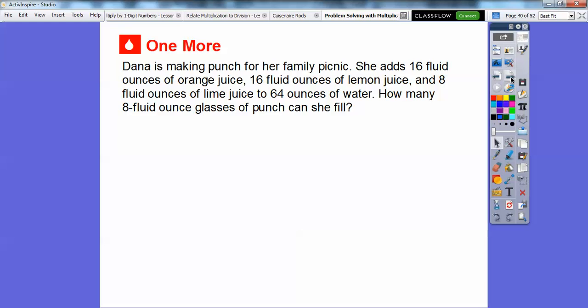Let's try one more. Dana is making punch for her family picnic. She adds 16 fluid ounces of orange juice, 16 fluid ounces of lemon juice, and eight fluid ounces of lime juice to 64 ounces of water. After all that, how many eight fluid ounce glasses of punch can she fill?